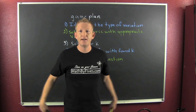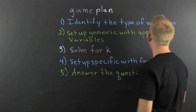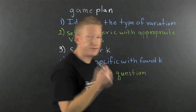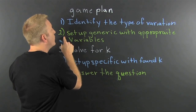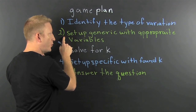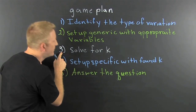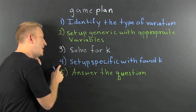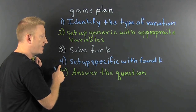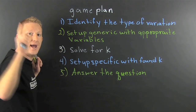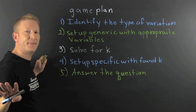We have a game plan. First, we're going to identify the type of variation. Then we're going to set up the generic with appropriate variables. Then we're going to solve for K. Then we're going to set up the specific with our found K. And finally, you answer the question.